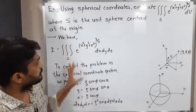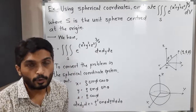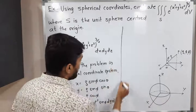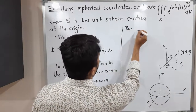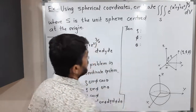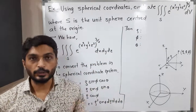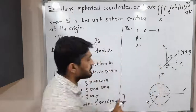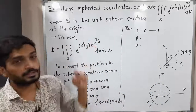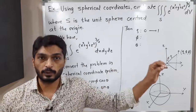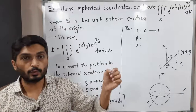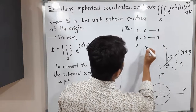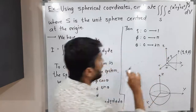We have used this substitution to convert the problem into the spherical coordinate system. The main task is to find the limits of ρ, φ, and θ. Since ρ is the distance from the origin and we have a unit sphere, the minimum distance is zero and maximum is one. So limits of ρ are 0 to 1. For φ the limit is 0 to π, and for θ the limit is 0 to 2π, so we cover the entire sphere.